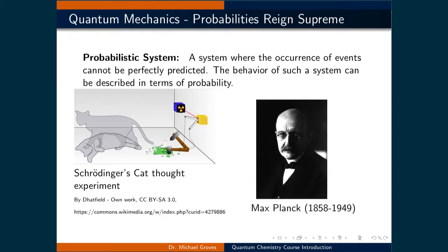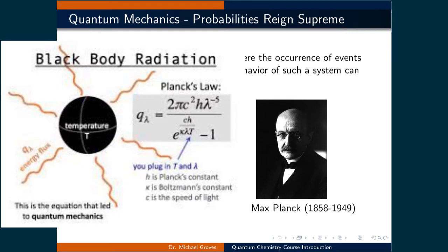Quantum mechanics, on the other hand, uses probability to describe the evolution of a system. A probabilistic system can be defined as one where the future state cannot be predicted perfectly. There are finite possibilities that certain outcomes may occur. Max Planck, who is arguably the father of quantum mechanics, was the first to apply quantum mechanical principles to solve the famous black body catastrophe problem at the end of the 19th century. We will examine this in a future lecture.